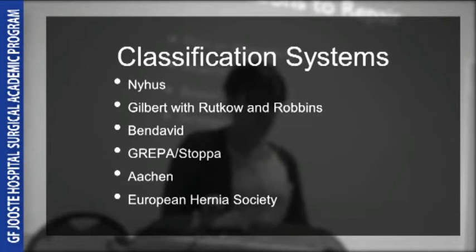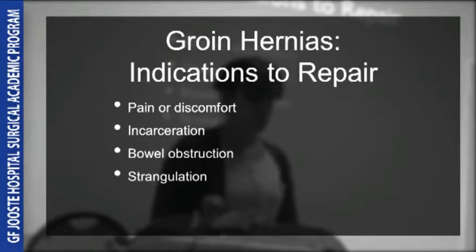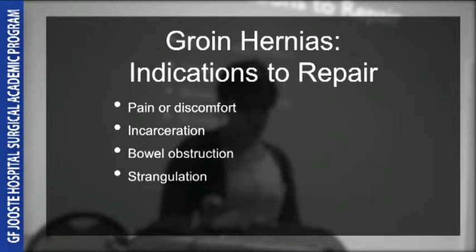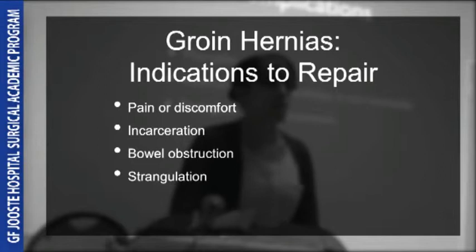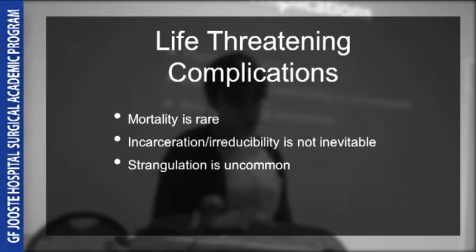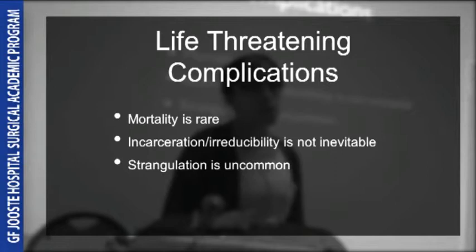Traditional teaching holds that all inguinal hernias must be repaired, as they will enlarge over time and become more difficult to operate, and are associated with serious complications. But numerous recent studies have brought this thinking into question as surgeons began to question the true natural history of groin hernia. There are absolute indications to repair a hernia, such as incarceration, strangulation, or bowel obstruction. The chance that a hernia will become irreducible increases with time, but over 12 months the probability is only about 6.5%, and over 10 years it is only 30%.